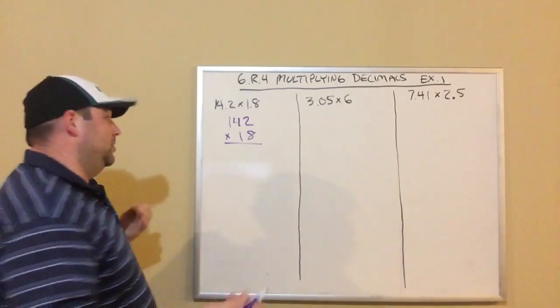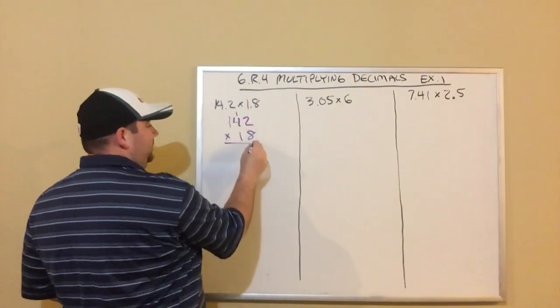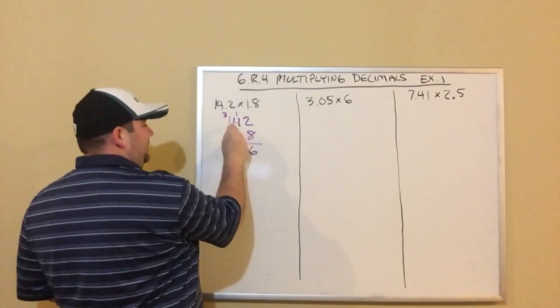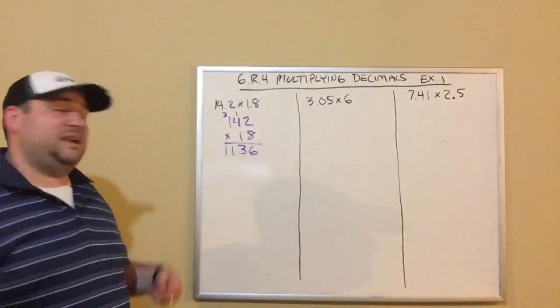8 times 2 is 16, carry my 1. 8 times 4 is 32, plus 1 is 33, carry my 3. 8 times 1 is 8, plus 3 is 11. So that's the first step.